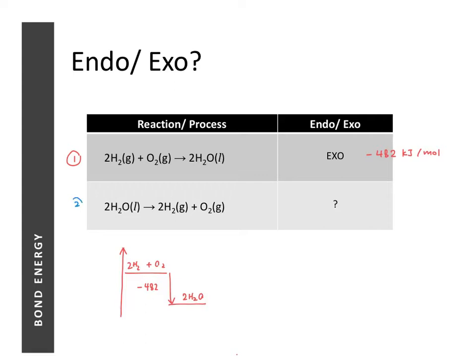For the reverse reaction, water is now the reactant and 2H₂ + O₂ are the products. Constructing the energy level diagram, the substances are at the same energy levels as before — just swapped. The magnitude of the enthalpy change is the same; only the sign changes. So when a reaction is exothermic, the reverse reaction will be endothermic, with the same numerical value for the enthalpy change.